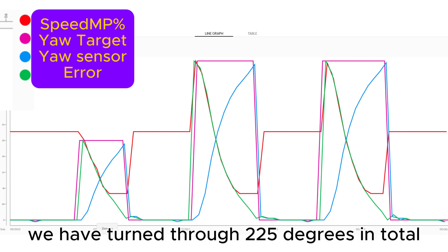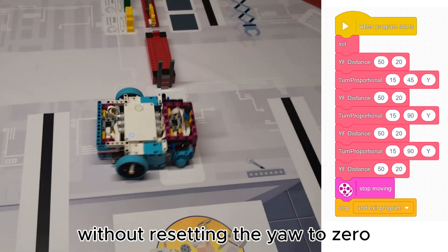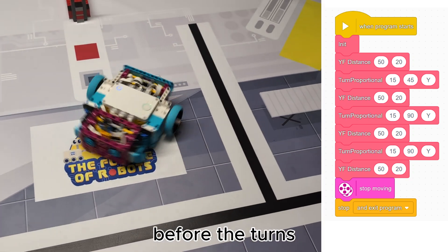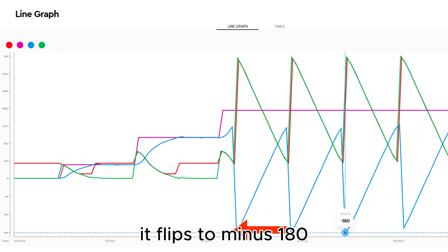We have turned through 225 degrees in total. Now let's carry out the same sequence without resetting the yaw to zero before the turn. When the yaw sensor gets to 180 degrees, it flips to minus 180.